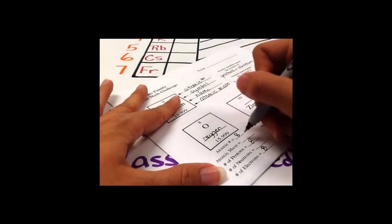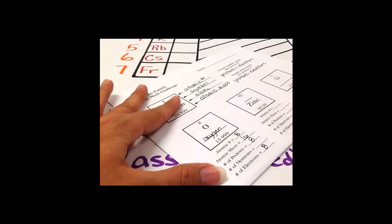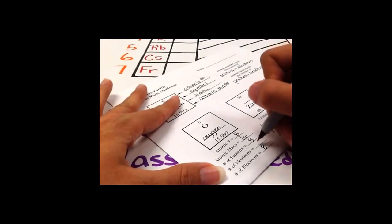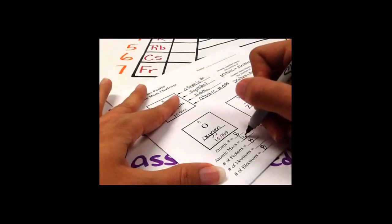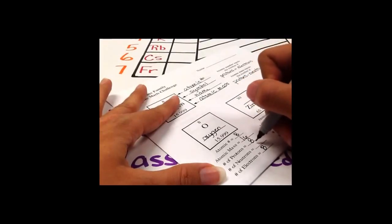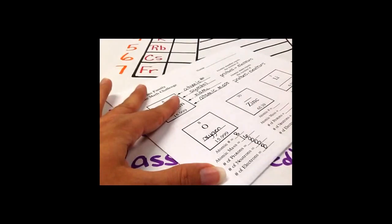My atomic mass rounded is 16. How do I find neutrons? I take my atomic mass, subtract my protons, and I get my neutrons.